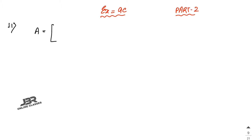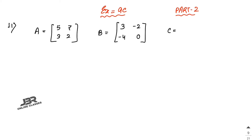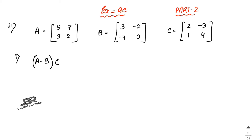In sum number 11, matrix A is [5, 7; 3, 2], matrix B is [3, -2; -4, 0], and matrix C is [2, -3; 1, 4]. The first part asks you to compute (A - B)·C.